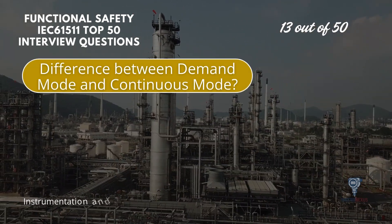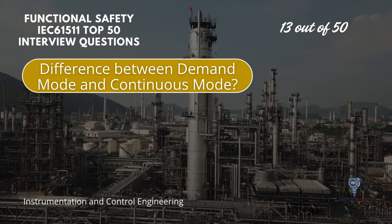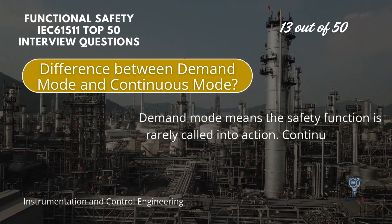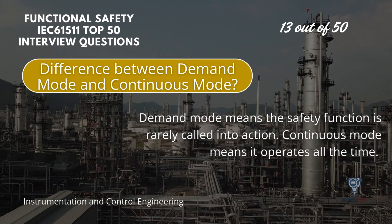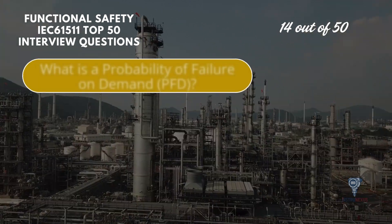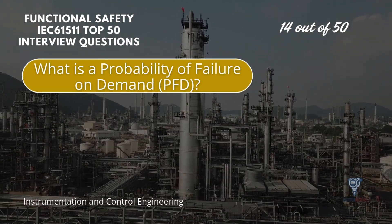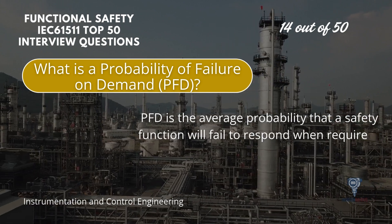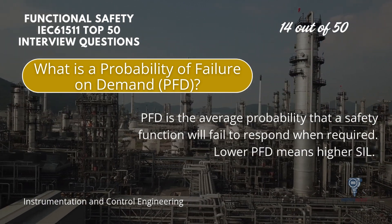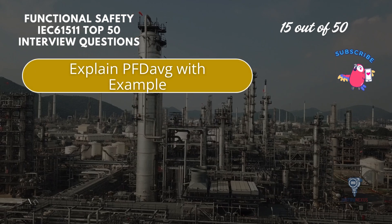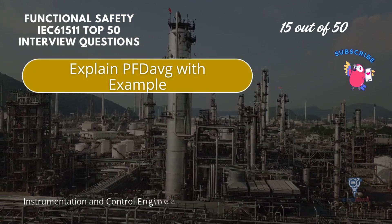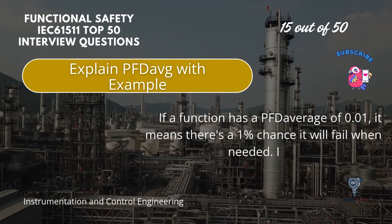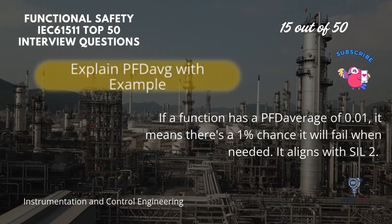What is the difference between demand mode and continuous mode? Demand mode means the safety function is rarely called into action, while continuous mode means it operates all the time. PFD is the average probability that a safety function will fail to respond when required. Lower PFD means higher SIL. For example, if a function has a PFD average of 0.01, it means there is a 1% chance it will fail when needed, which aligns with SIL 2.